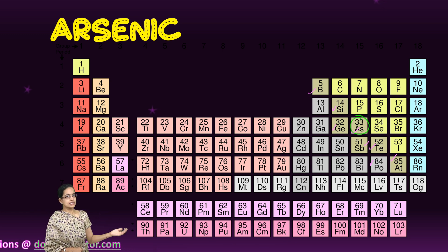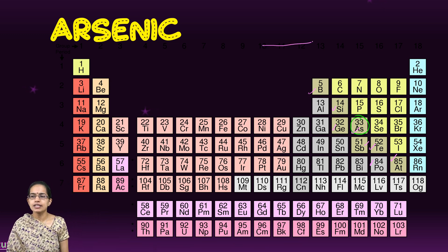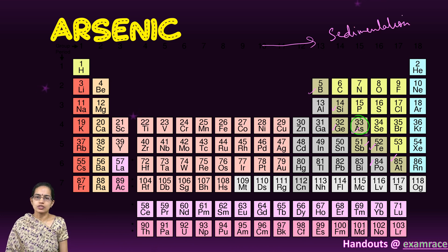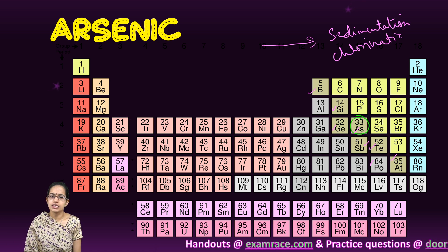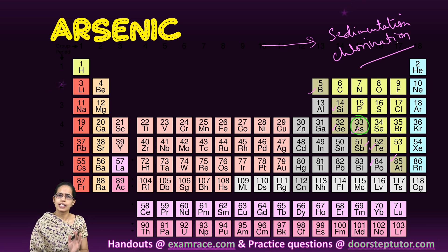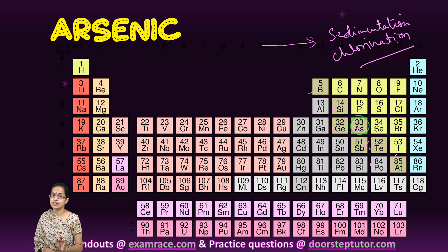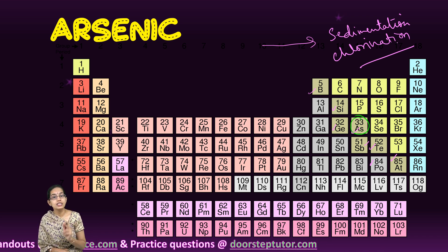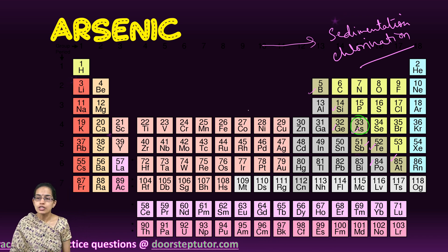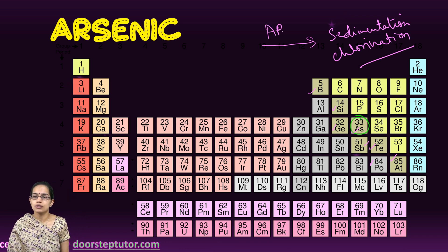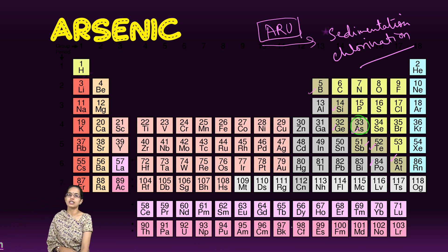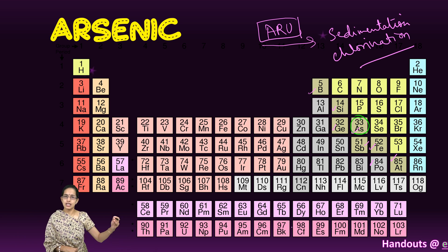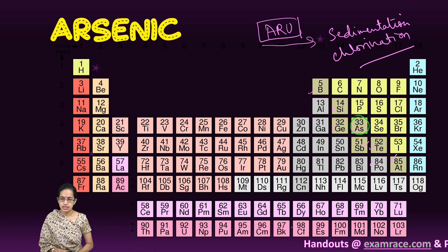When arsenic is present in river water, it can be removed simply by sedimentation or by chlorination. Either of those processes can easily remove arsenic from flowing river water. But when it is present in groundwater, it is much more difficult to remove, and we need arsenic removal units and various technologies, which we will understand in a later section.